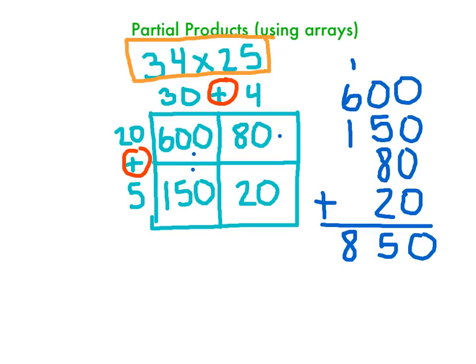So our final answer is going to be 850. So 34 times 25 should add up and be 850. All right, thanks for watching.